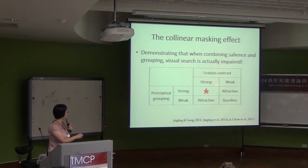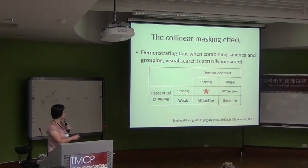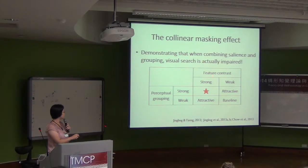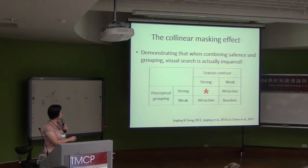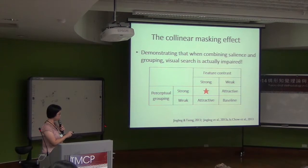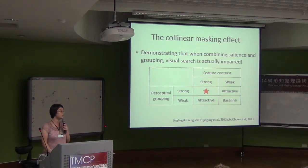We are curious about the whole picture, and we can put this into a 2×2 framework. Feature contrast can be strong or weak, and perceptual grouping can be strong or weak. When both are weak, this is the baseline. Compared to this baseline, if perceptual grouping is strong, it can attract attention. If feature contrast is strong, it can attract attention. However, we do not know what happens when both are strong.